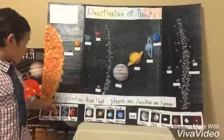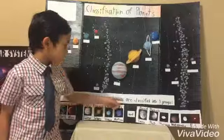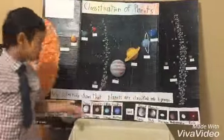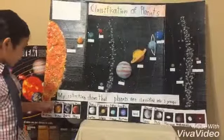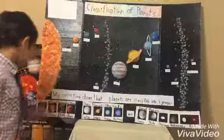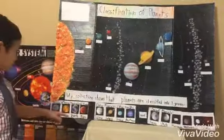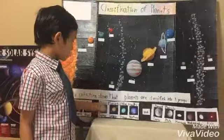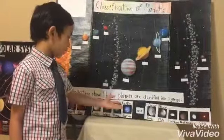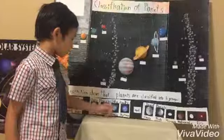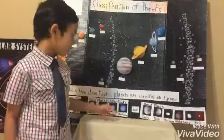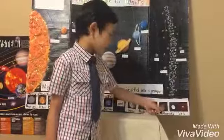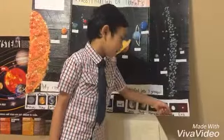My collection shows that planets are classified into three groups. Inner planets or terrestrial planets: Mercury, Venus, Earth, and Mars. And outer planets or gas giants: Jupiter, Saturn, Uranus, and Neptune. And dwarf planets: Ceres, Pluto, Haumea, Makemake, and Eris.